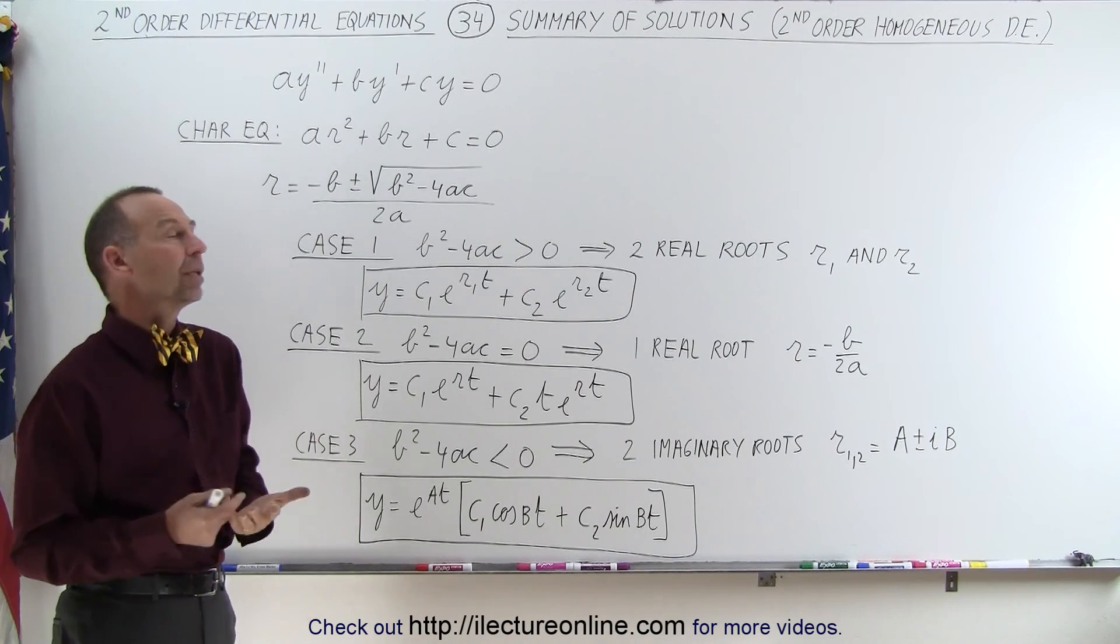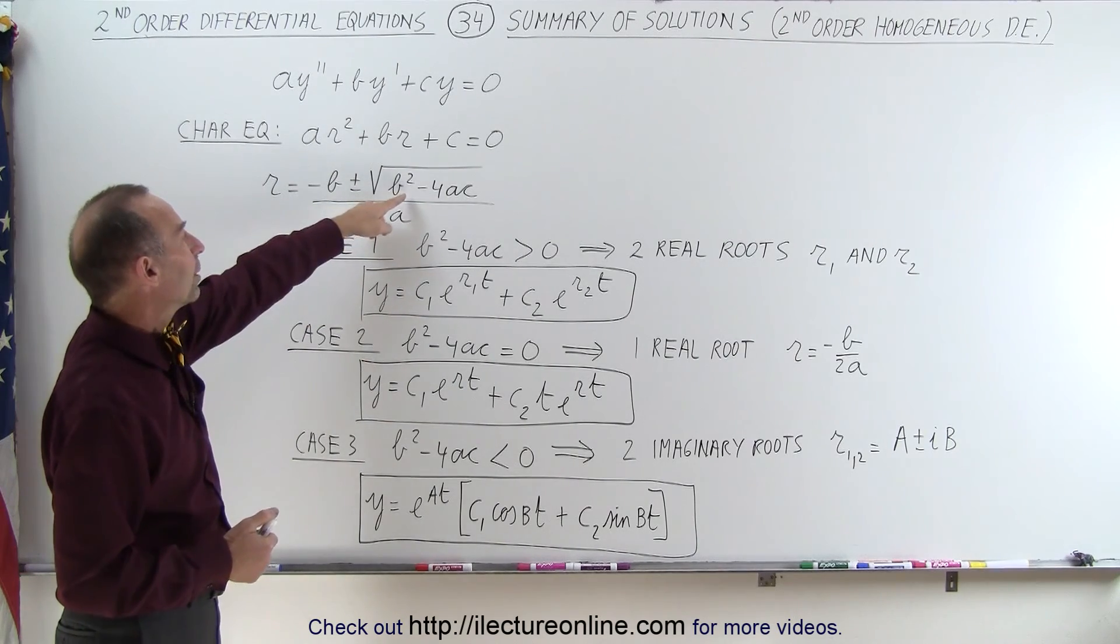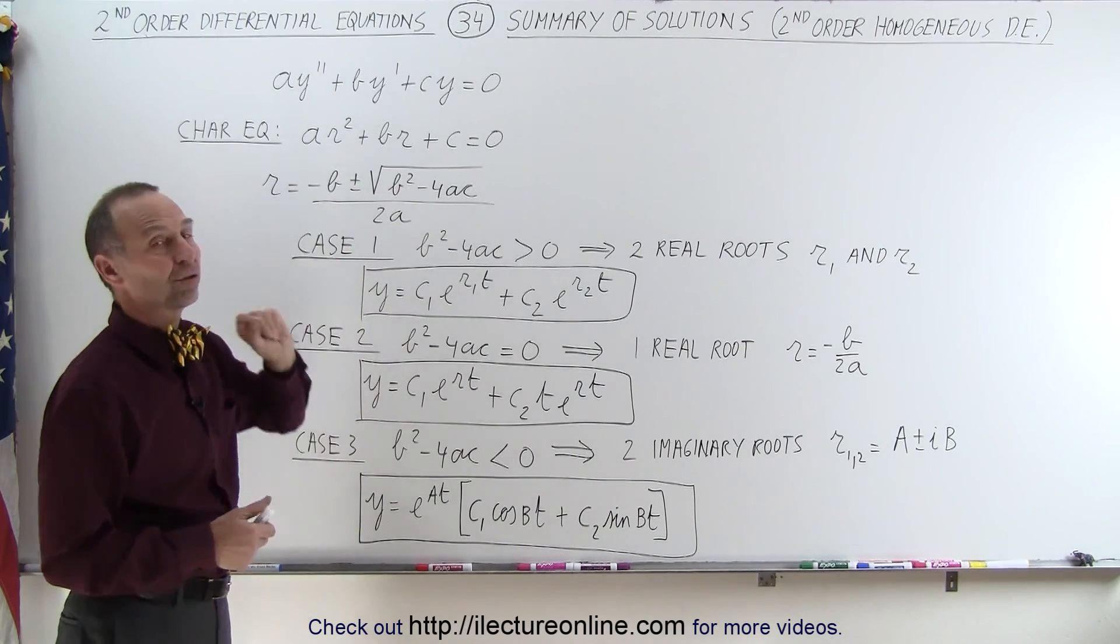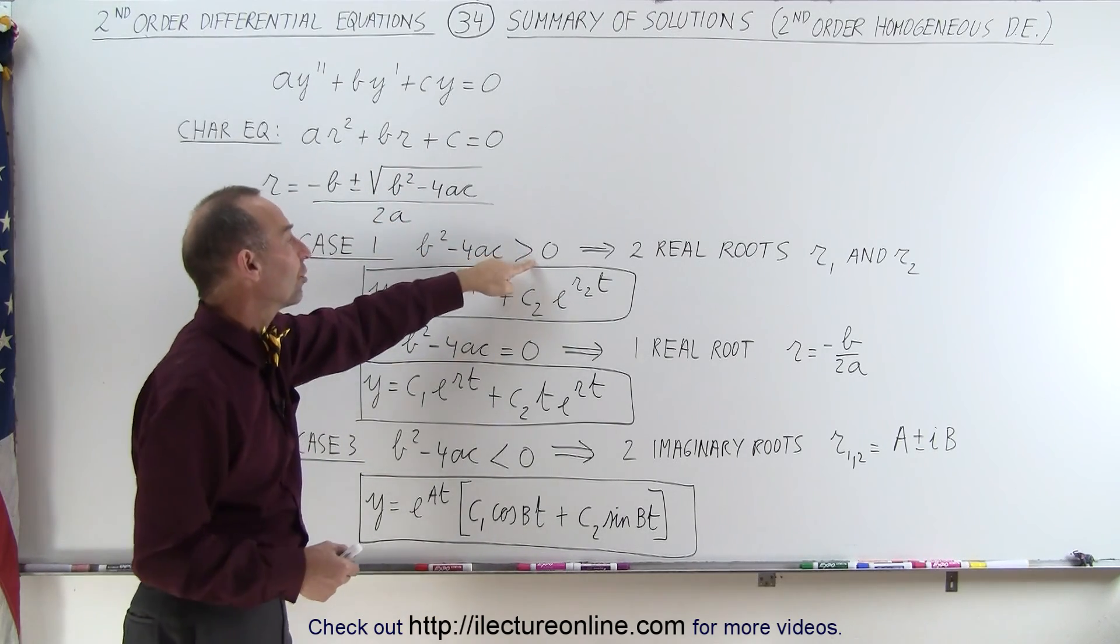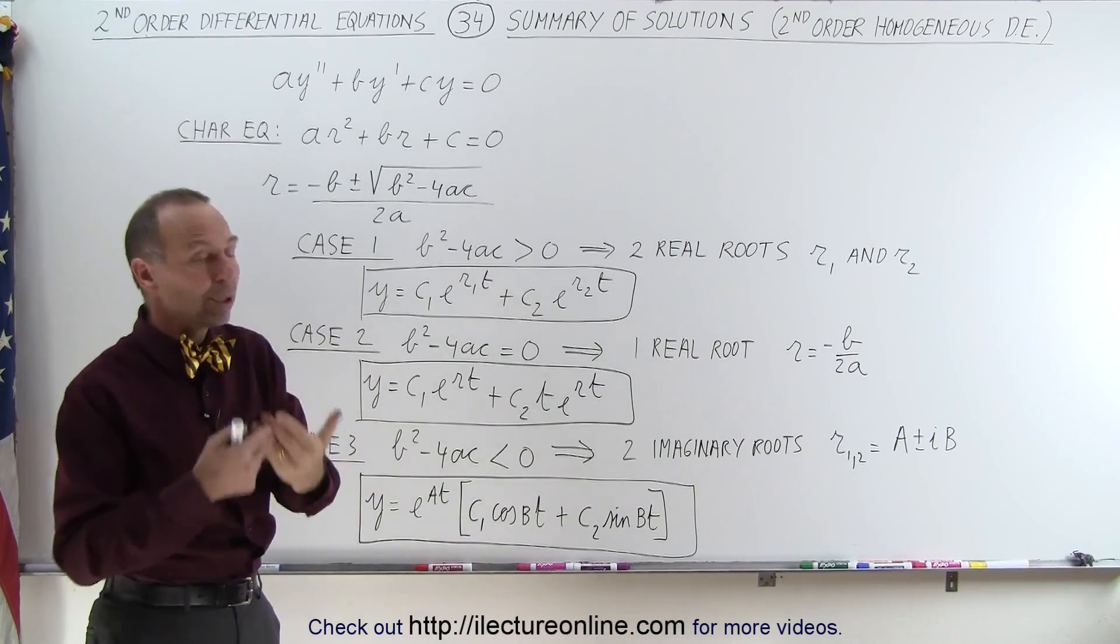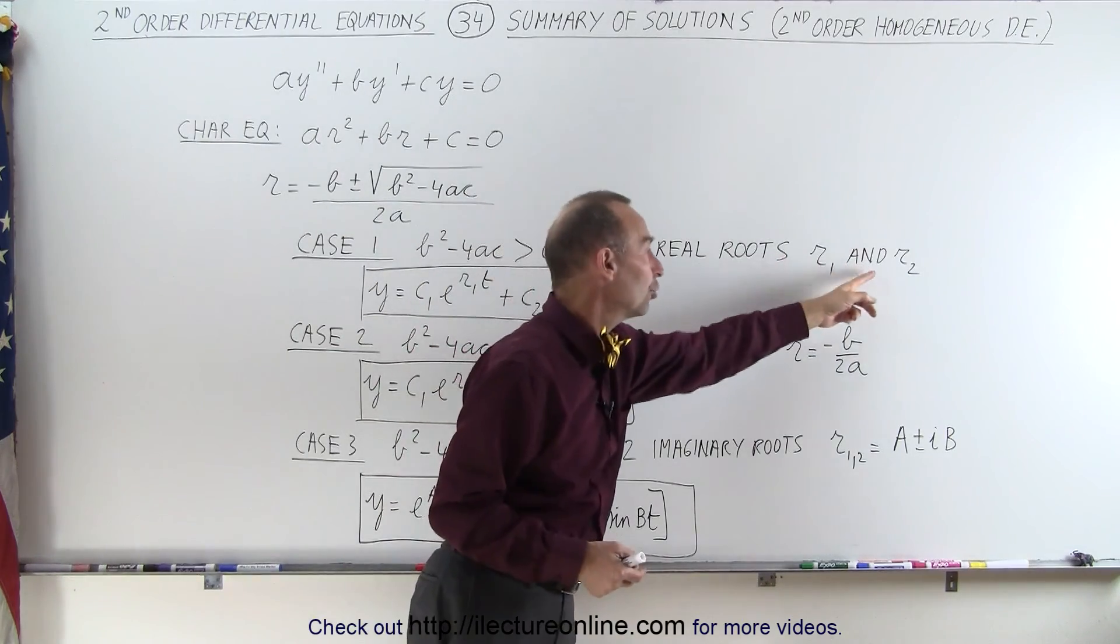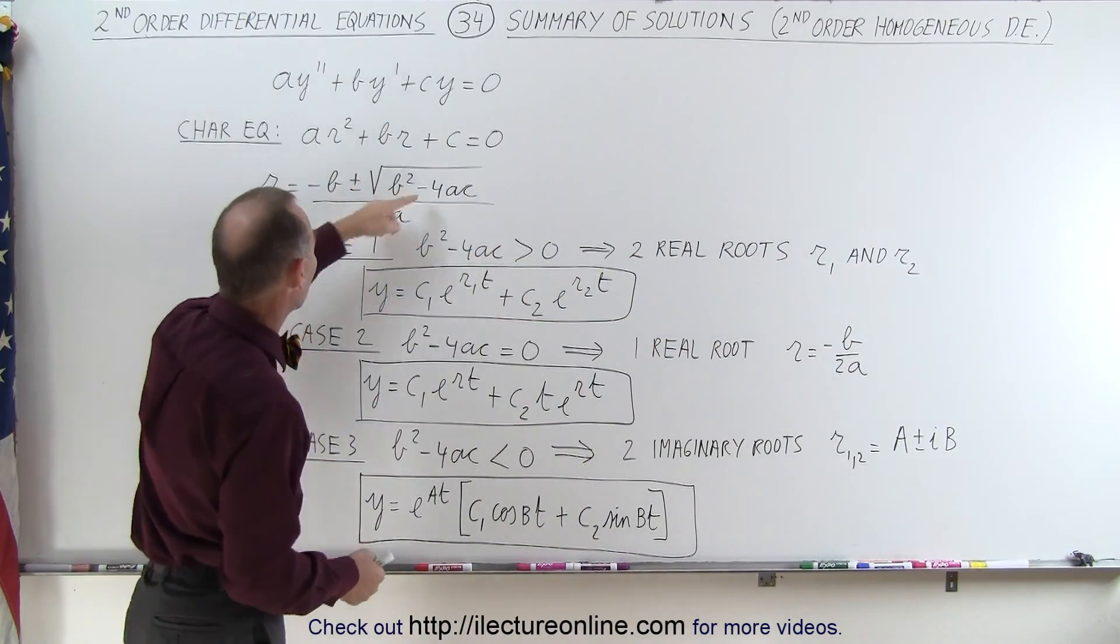There's then three different possibilities. The possibilities depend upon the value of b² - 4ac. If b² - 4ac is larger than zero, then we end up with two real roots, call them r₁ and r₂, which is determined by this equation right here.